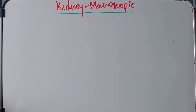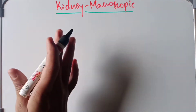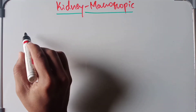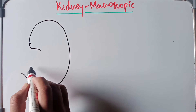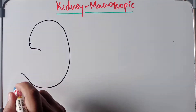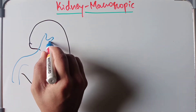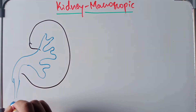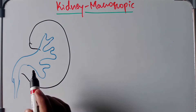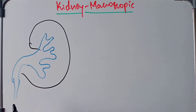Hello guys, welcome back. In this video we are going to discuss the macroscopic structure of the kidney. When the kidney is sectioned longitudinally, it presents with the kidney proper and the renal sinus. This is the macroscopic structure of the kidney as seen in longitudinal section.